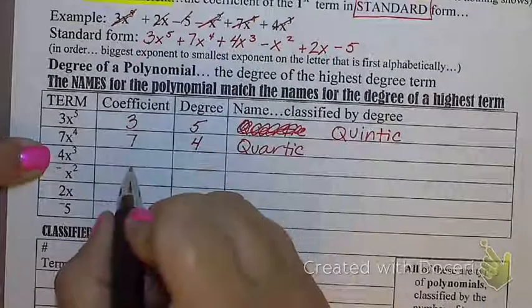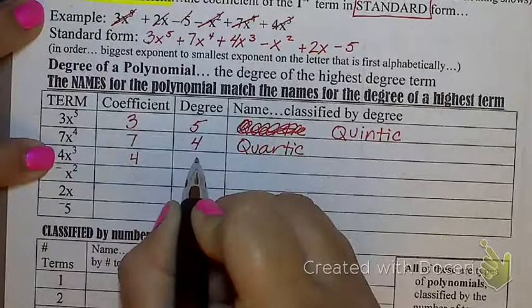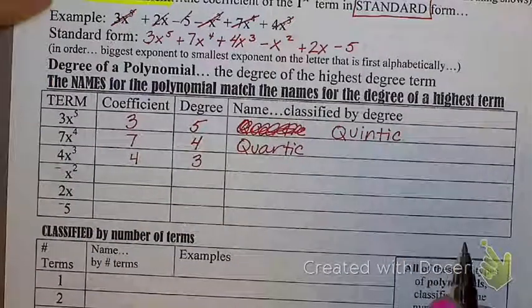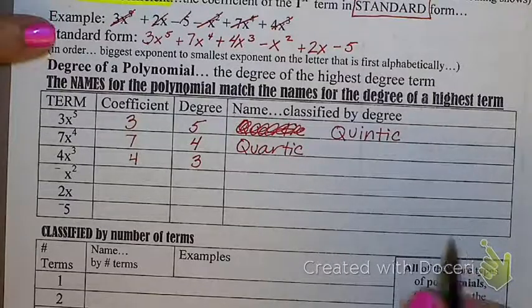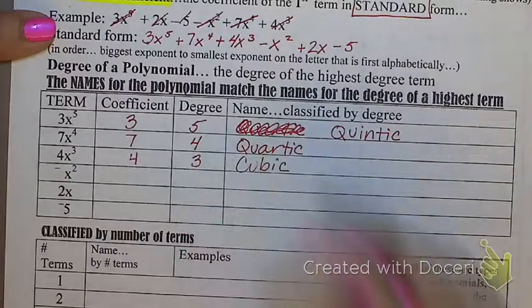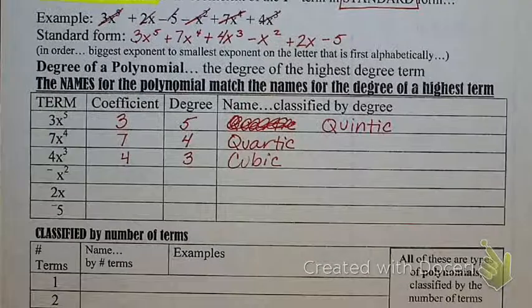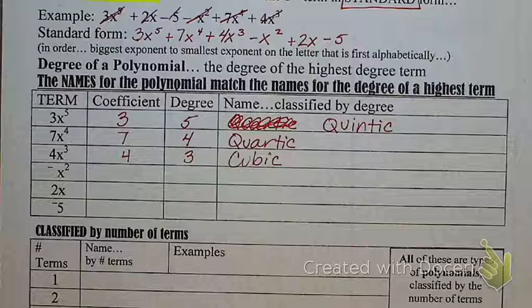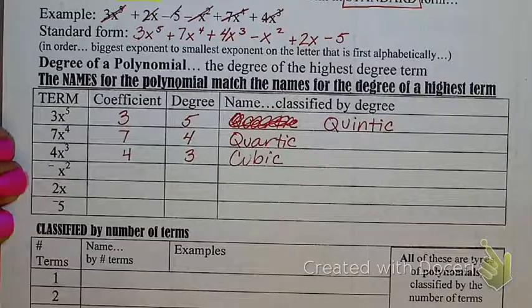Next one. What's my coefficient? Four. What's my degree of this term? What do I call a third degree? This is a word you've heard. I know you've heard it. It's a cubic. Now we're getting into words that are going to be familiar to you. I'm just hopefully going to be giving you a little bit more meaning to words that you've heard before.